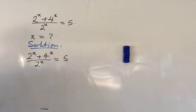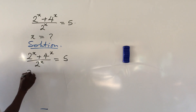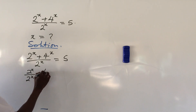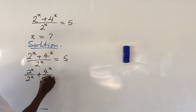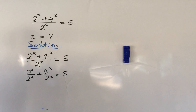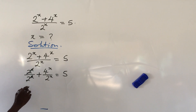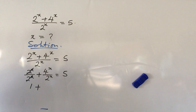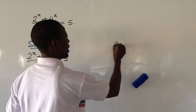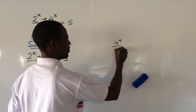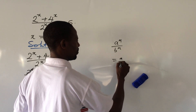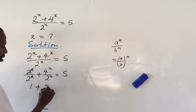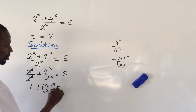We put down our equation: (2^x + 4^x) / 2^x = 5. We can simplify this by splitting the fraction: 2^x / 2^x plus 4^x / 2^x equals 5. Using the law of indices — a^m / b^m = (a/b)^m — the second term becomes (4/2)^x, so we have 1 + (4/2)^x = 5.